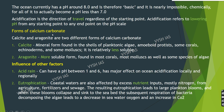Forms of calcium carbonate are important because these are minerals found in the shells of aquatic organisms. Calcite and aragonite are two different forms of calcium carbonate. Calcite is the mineral form found in the shells of planktonic algae, amoeboid protists, some corals, echinoderms, and some mollusks like oysters — it is relatively less soluble. Aragonite is the more soluble form of calcium carbonate, found in most corals, most mollusks like snails, as well as some species of algae.